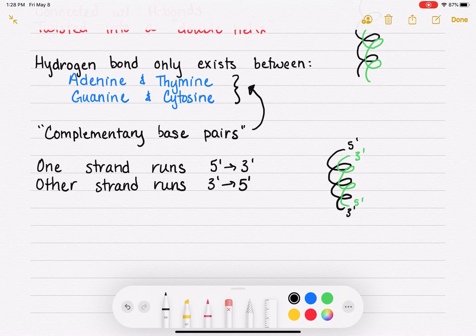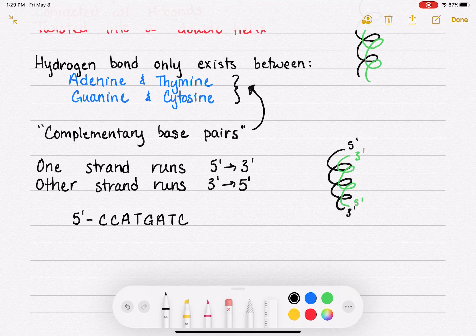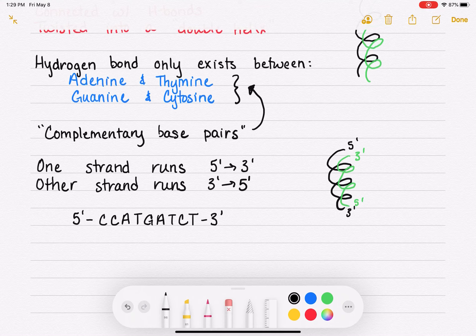So typically we're just going to use this notation where we're writing them from left to right. So let's write a practice strand of DNA. Let's say 5'-CCATGATCT-3'. So this would be a very small strand of nucleic acid.